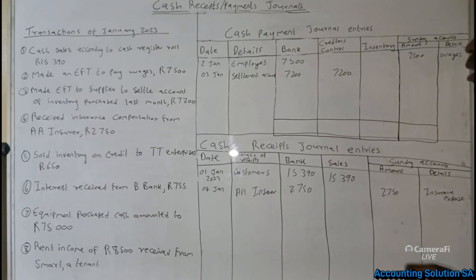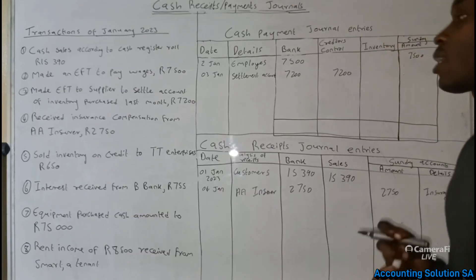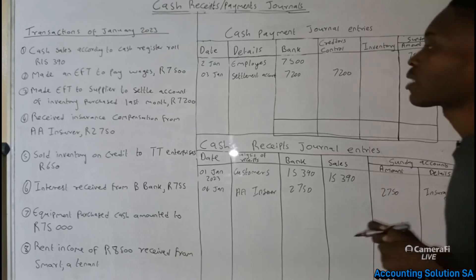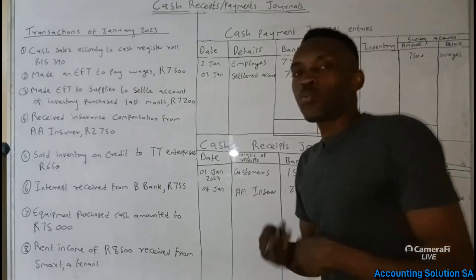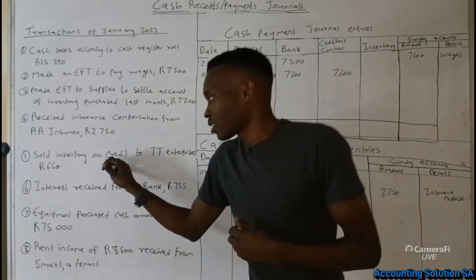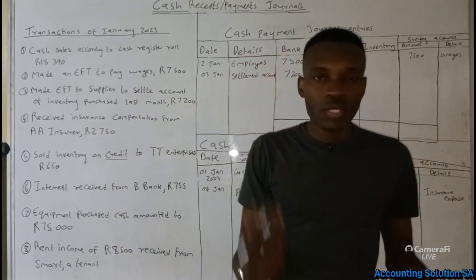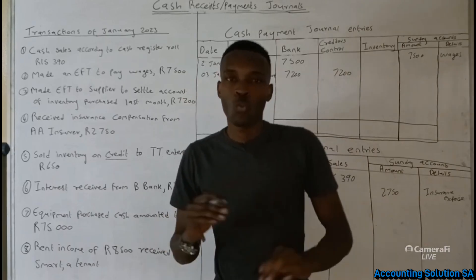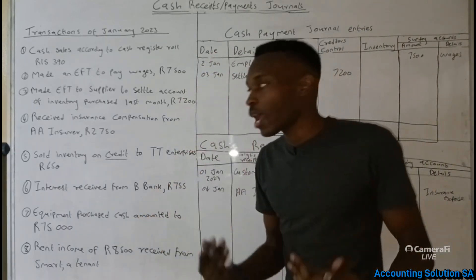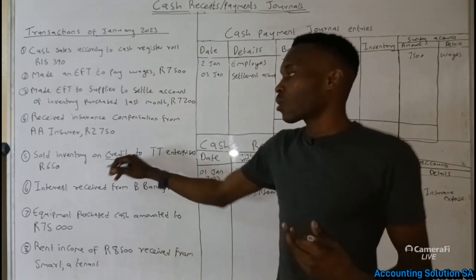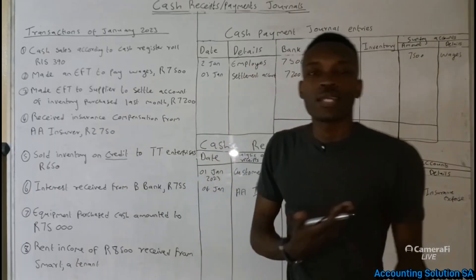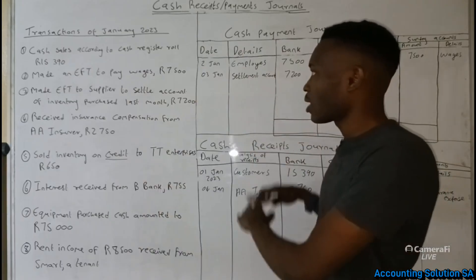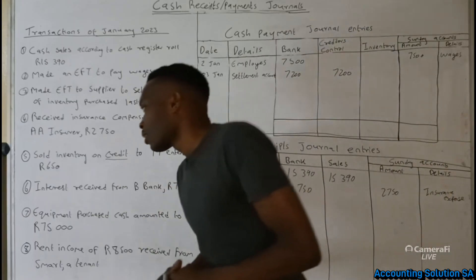Transaction number five: sold inventory on credit to TT Enterprise amounting to 650. We sold inventory but not for cash — it was on credit. We are not going to record it under either cash journal because these two journals deal with cash items only. This transaction will be recorded under the debtors control account, so we skip it here.